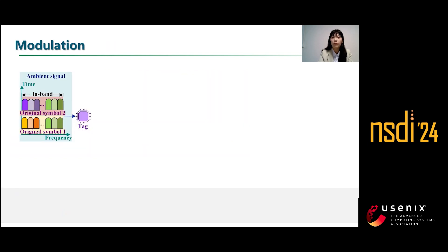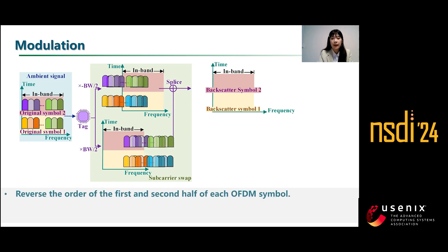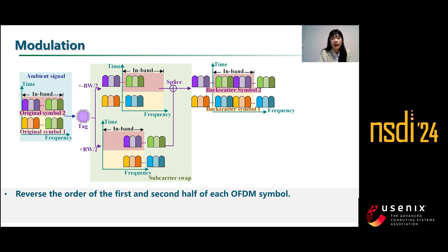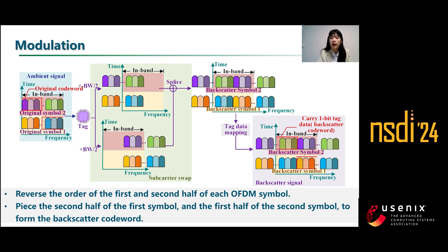To generate the backscatter cohort, the tag first produces a square wave at a frequency of half the bandwidth, shifting the backscatter signal by plus and minus one half of the bandwidth. As the backscatter signals transmit over the air, their embedded parts naturally splice and form a new backscatter symbol whose subcarriers are swapped. Since the halves of such symbols come from two different OFDM signals, they can be modulated independently, meaning the tag can embed data at the half-symbol level. The tag embeds one bit of data over the second half of the first symbol and the first half of the second symbol, generating quasi-orthogonal backscatter cohorts. To realize this, we only need a passive single-pole four-throw switch to generate the four desired reflection coefficients.